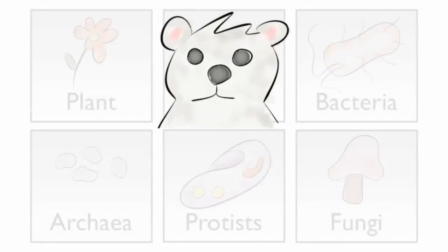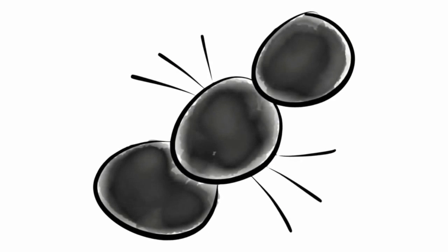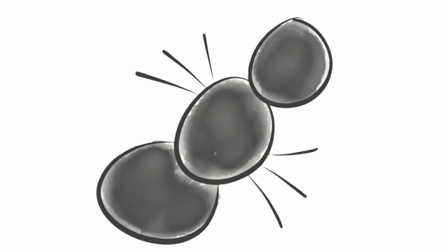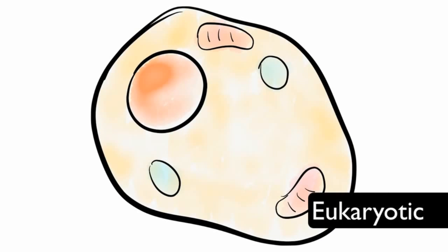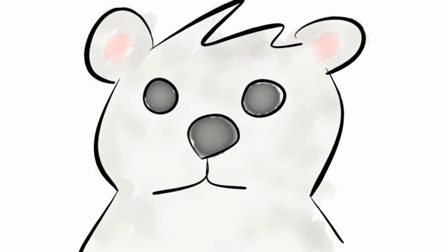Organisms in the animal kingdom include bears, fish, insects, and other multicellular organisms. All animals are made of animal cells that have a nucleus. Cells with a nucleus are called eukaryotic. Lastly, all animals are heterotrophs because they eat food for energy.